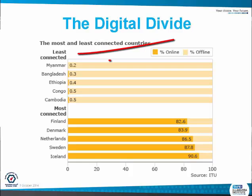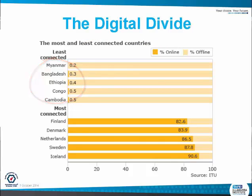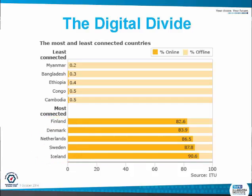The most and least connected countries: the least connected includes Myanmar, Bangladesh, Ethiopia, Congo and Cambodia — these are the poorer countries. The most connected, the richer countries, include Finland, Denmark, the Netherlands, Sweden and Iceland.